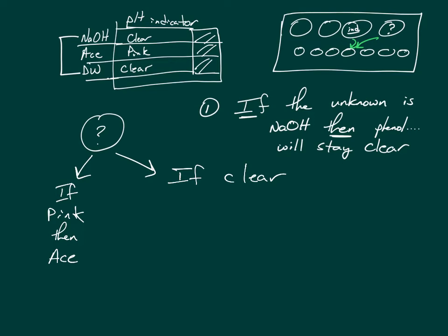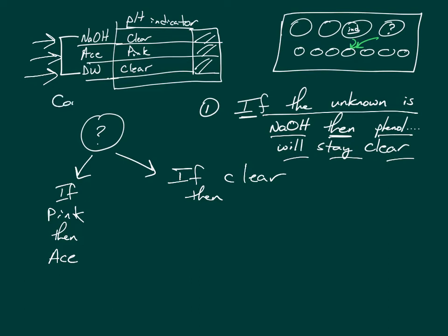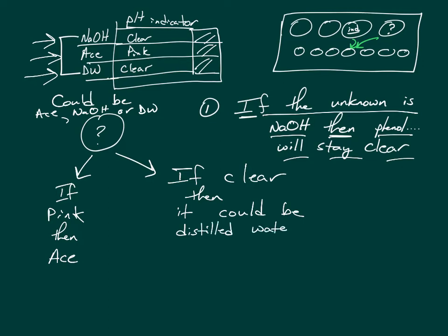You had to have a hypothesis — it didn't matter what the hypothesis was. You could actually list three hypotheses: if it's sodium hydroxide, it'll be clear; if it's acetic acid, it'll be pink; and if it's distilled water, it'll be clear. So if clear, then it still could be sodium hydroxide or distilled water.